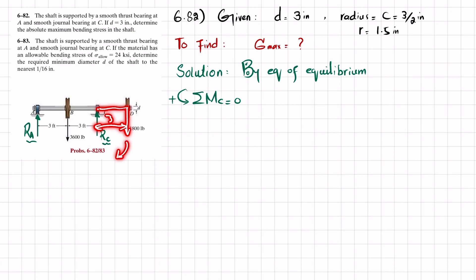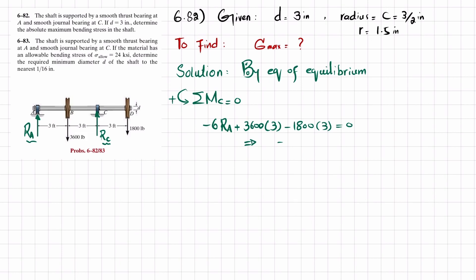This third moment is clockwise, so it is negative. Writing the equation: -6·Ra + 3600·3 - 1800·3 = 0. From here, -6·Ra = -5400, so Ra equals 900 pounds.